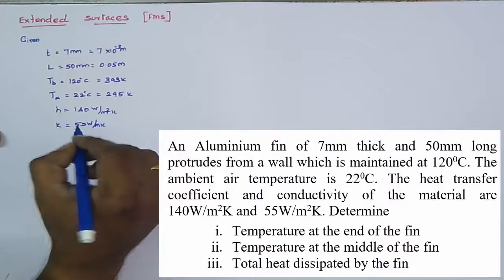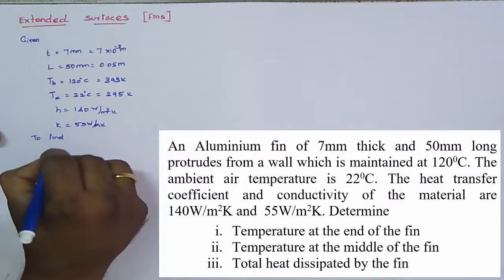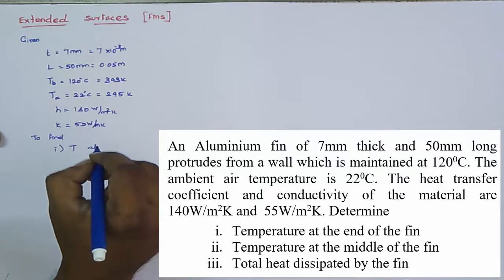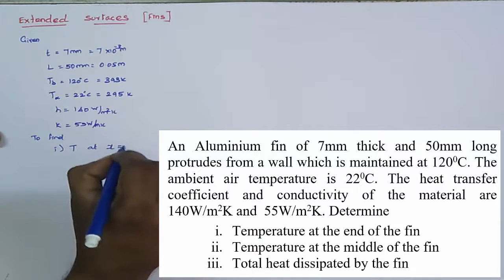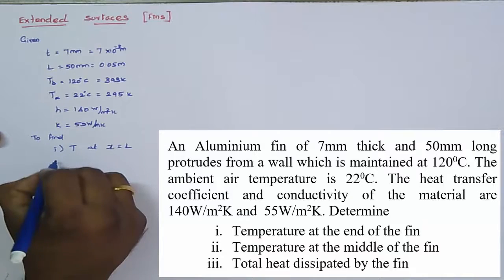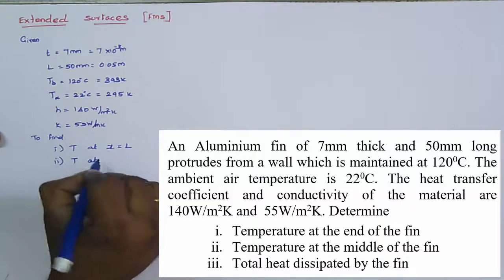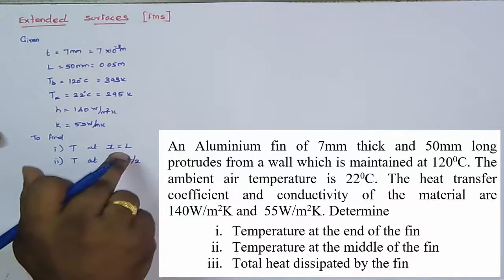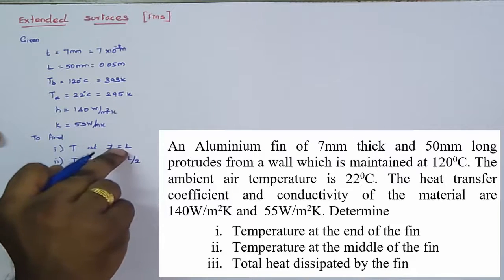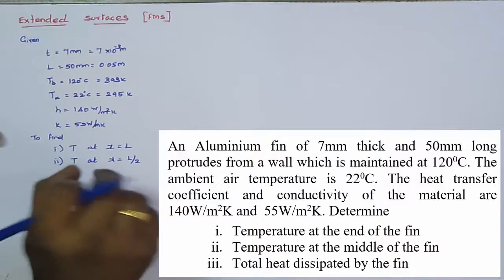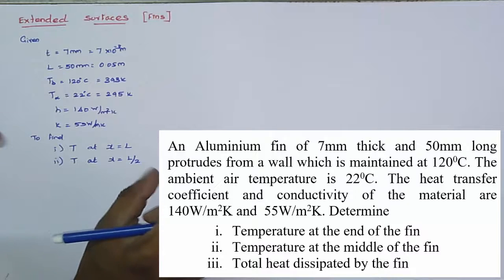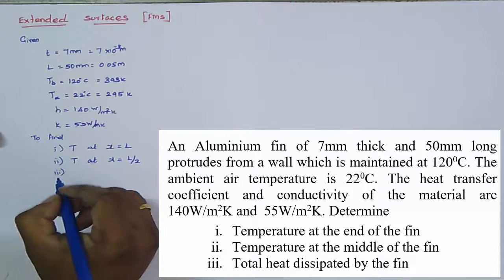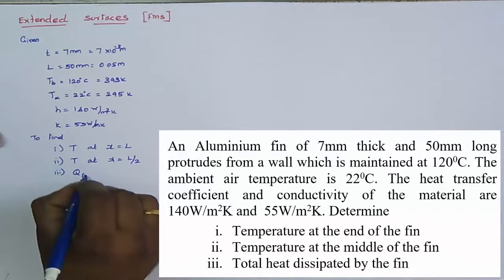There are three cases given in the problem. Case 1: find the temperature at the end of the fin — take X equal to L. Case 2: find the temperature at the middle of the fin — X equals L divided by 2, that is 25 mm. Case 3: find the total heat dissipated by the fin, Q fin.